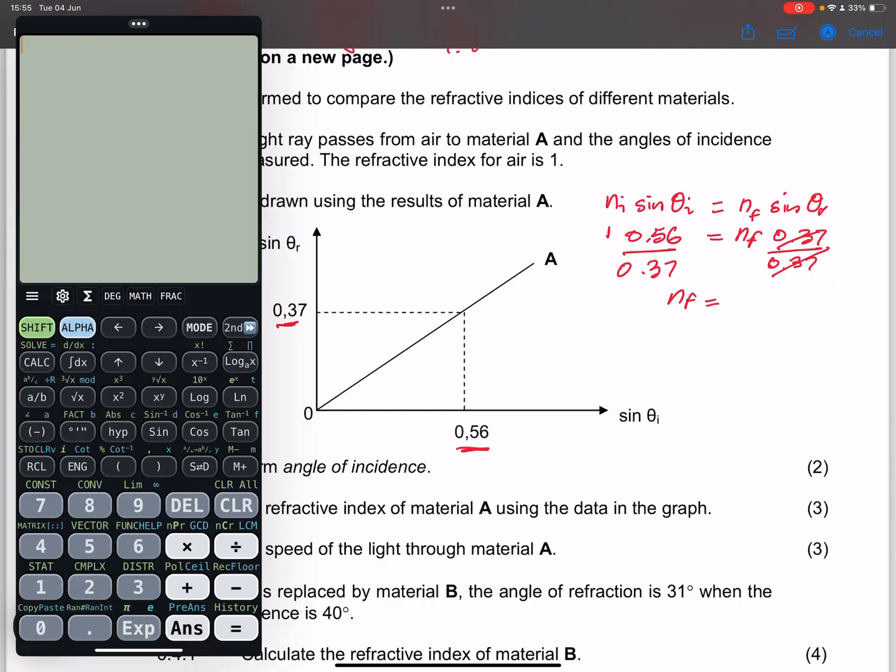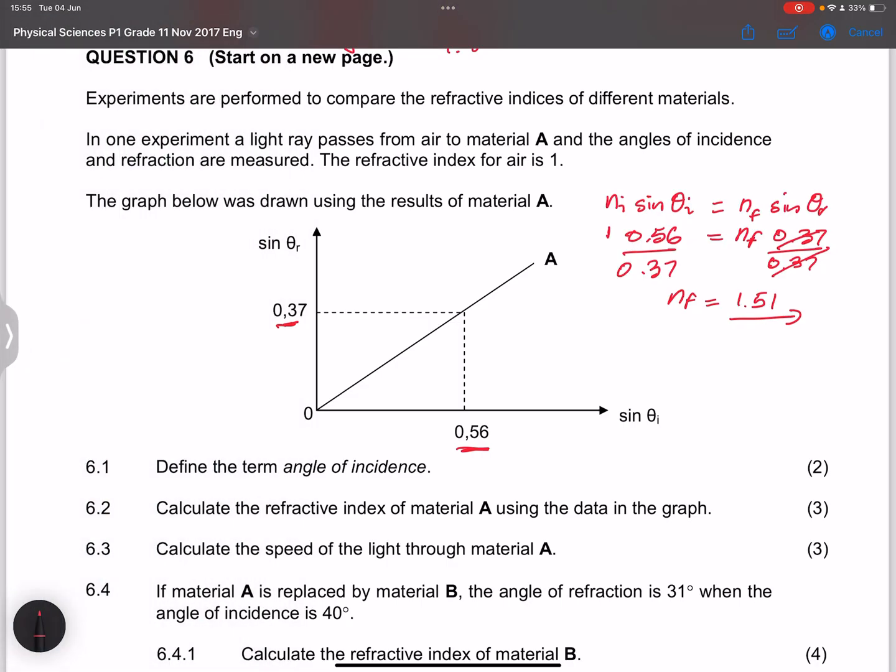So if we take our calculator, we'll have 0.56 divided by 0.37. And I get a value of 1.51. So that is it there. So that's the refractive index of the material.